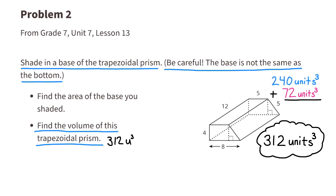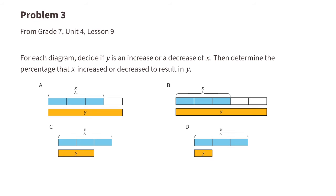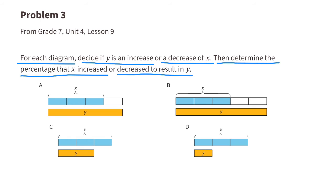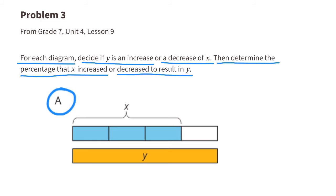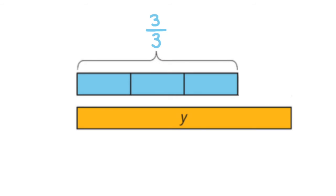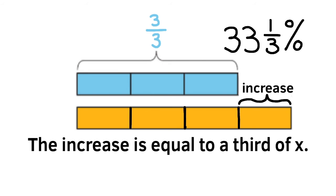Problem number three from 7th grade unit 4, lesson 9: for each diagram, decide if y is an increase or decrease of x, then determine the percentage. Looking at x — only the shaded blue part — the three blue sections plus the white section on the right total the same length as y. X is divided into three thirds; the increase from x to y equals one of those thirds, which is 33 and one-third percent. So y is an increase of 33 and one-third percent of x.